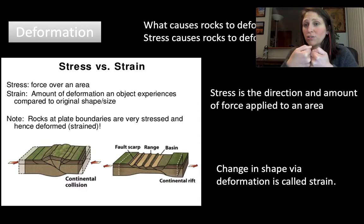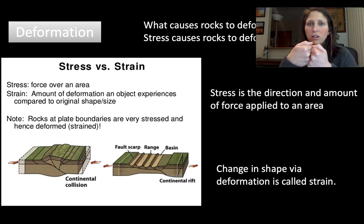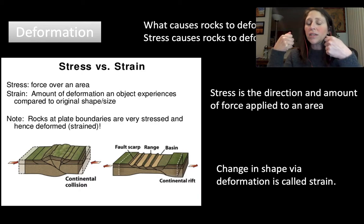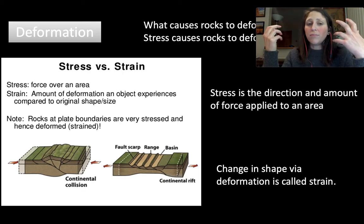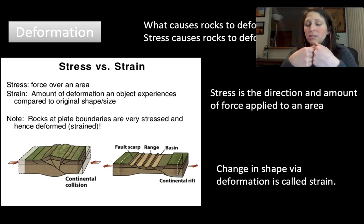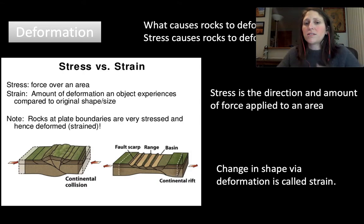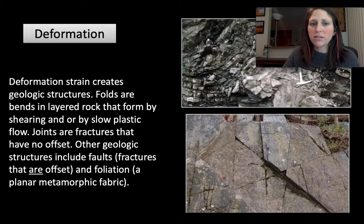Rocks can also be pulled apart. In our divergent, extensional settings, rocks can be pulled apart from one another. And then in our last type of tectonic setting we can have shear — rocks can rub against each other. They're not being compressed or pulled apart, but they're shearing. All three of these are different types of stress.